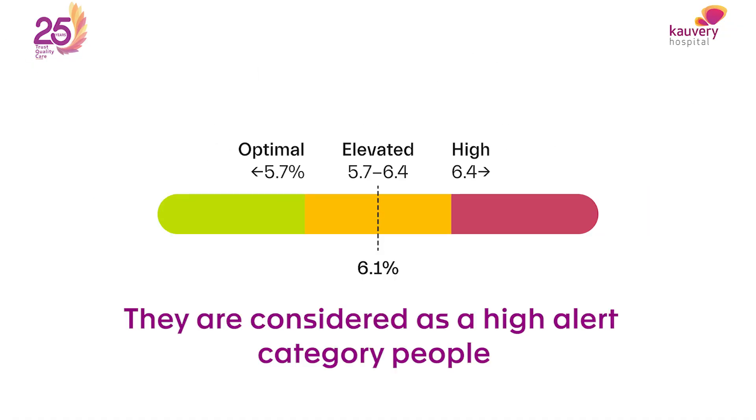If the HbA1c is more than 6.1, they will come under the high alert category. So in the first three months, we will check the HbA1c, and if it is above the threshold, we have to be very careful and monitor sugar closely.